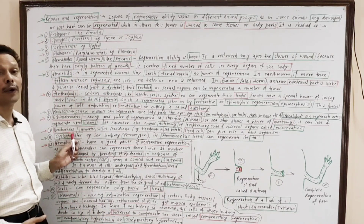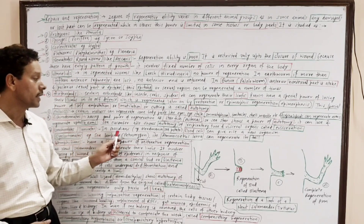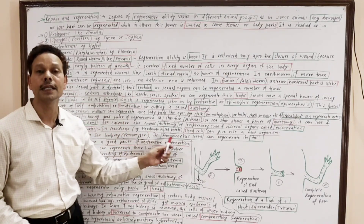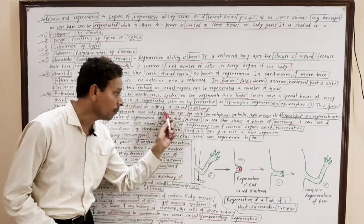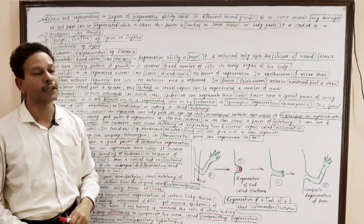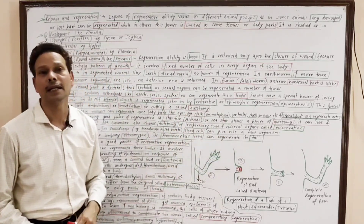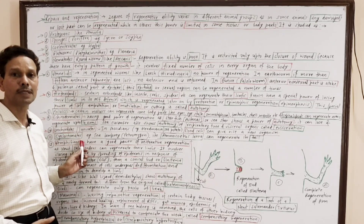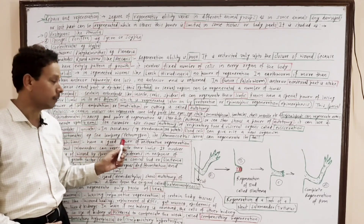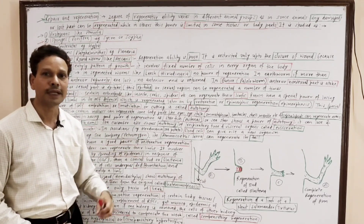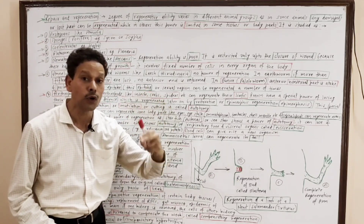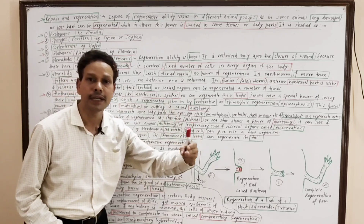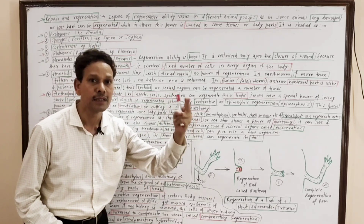In urochordates like tunicates, ascidians (Herdmania, sea potato), the entire body can be regenerated from the blood cells. In cyclostomes like sea lamprey (Petromyzon), the ammocoetes larva can regenerate its tail.